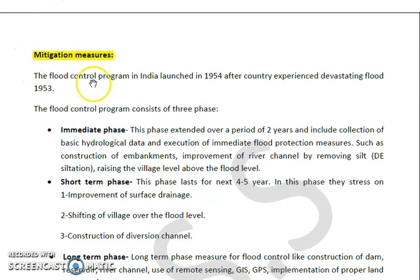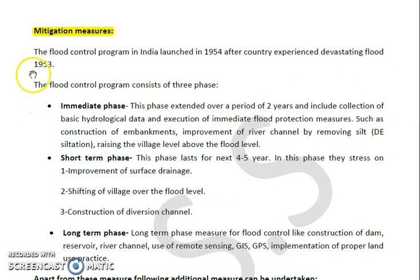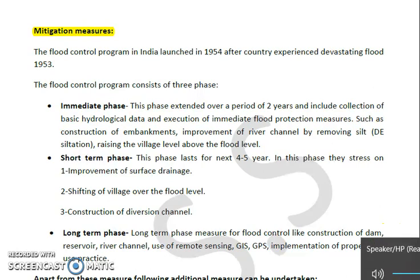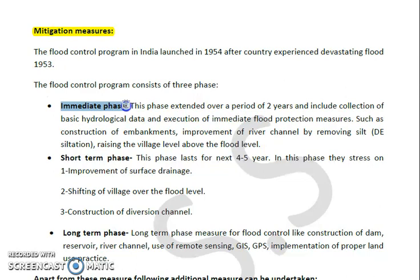The flood control program in India was launched in 1954 after the country experienced a devastating flood in 1953. This program consisted of three phases. The first was the immediate phase, lasting around two years, which included the collection of basic hydrological data and execution of immediate flood protection measures.